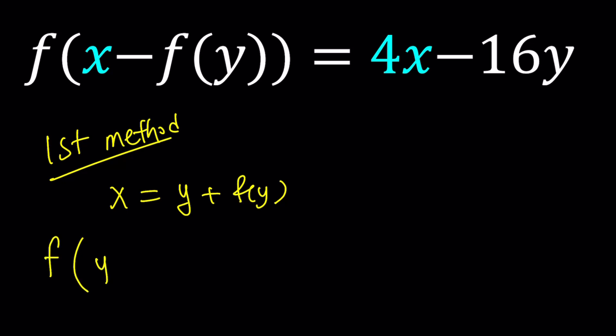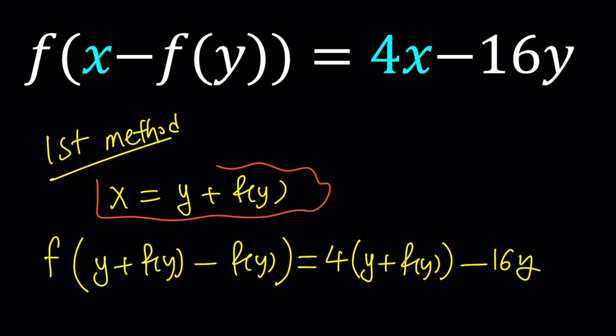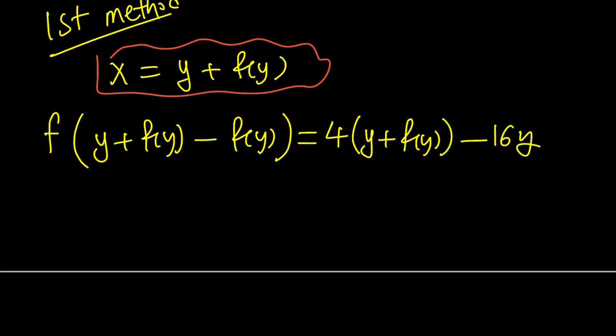Replace x with y + f(y), and then subtract f(y). Set it equal to now 4. We also need to replace this x with y + f(y), and then minus 16y. Now, notice that by doing this, we turn everything into y's. So everything is in terms of y, which is good. And now we're going to simplify this. f(y) cancels out, and we get f(y) = 4y + 4f(y) - 16y. Awesome.